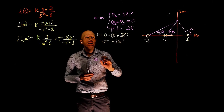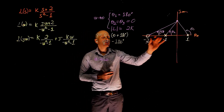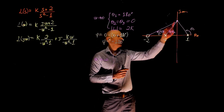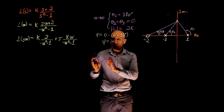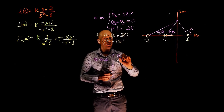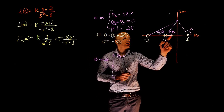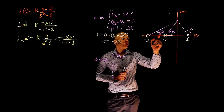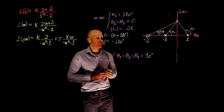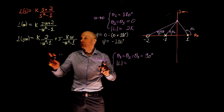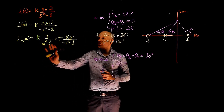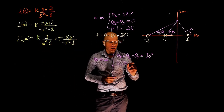Now we move to the point where the frequency tends to infinity. Using the same graph, we send this point to infinity along the imaginary axis. θ₁ tends to 90°, θ₂ also tends to 90°, and θ₃ also tends to 90°. What is the magnitude of the transfer function? When the frequency tends to infinity, the real part is zero and the imaginary part is also zero — 2 divided by infinity is zero, and ω divided by ω² also tends to zero.